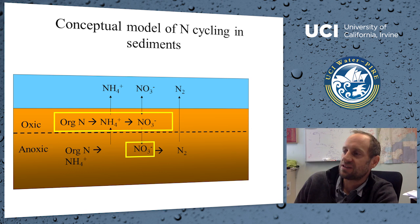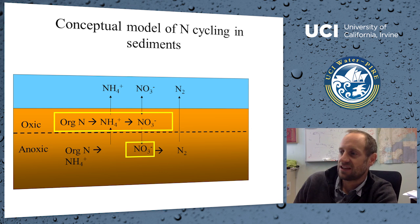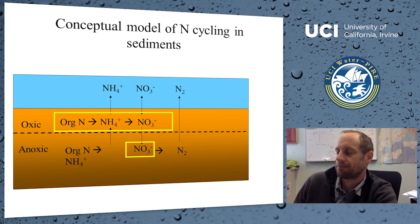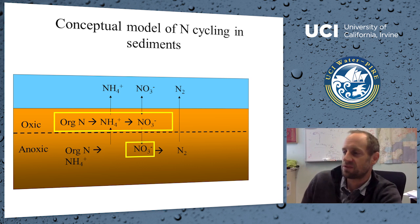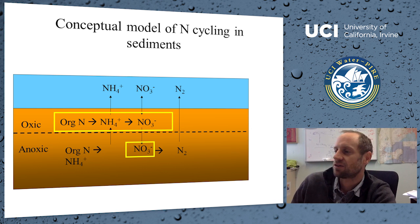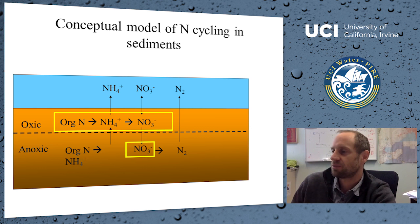Nitrification is an essential link because nitrate is the precursor to denitrification. Some of that nitrate is released to the water column as bioavailable nitrogen, but particularly in deep dark muddy sediments, a large amount diffuses into the anoxic zone and is used as an alternative electron acceptor to oxygen by bacteria — so-called facultative denitrifiers — producing N₂ gas.